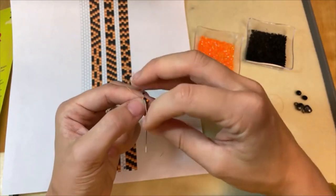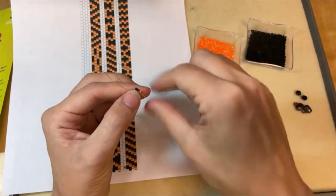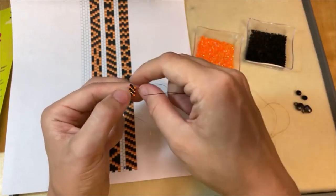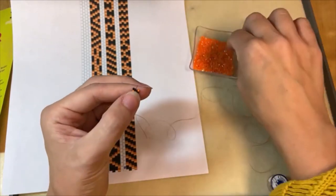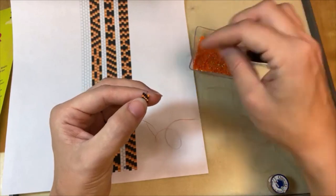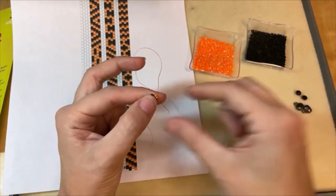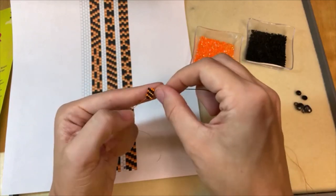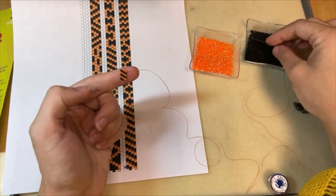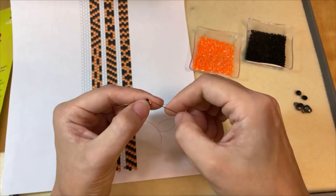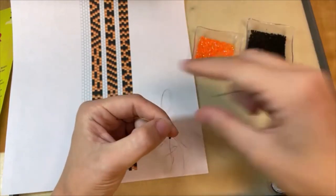Yeah so as you can see once you get your first rows established and you get going it works up pretty fast, especially when the rows are only four beads wide. Super fun. So yeah you just keep going like this. Keep going.